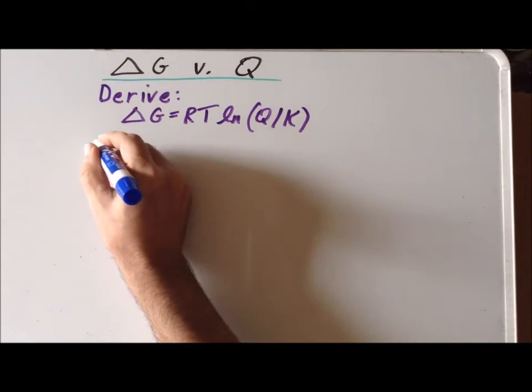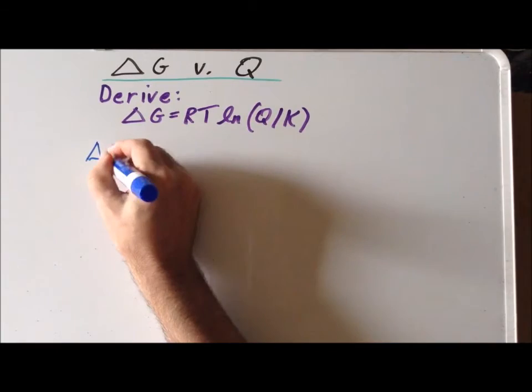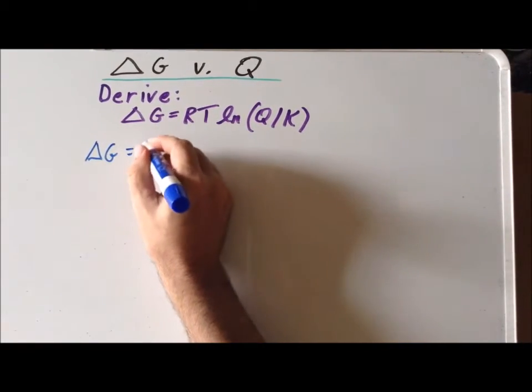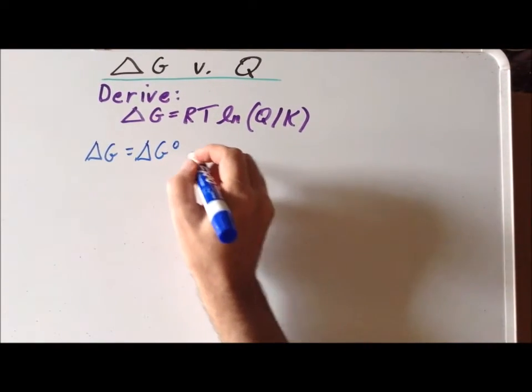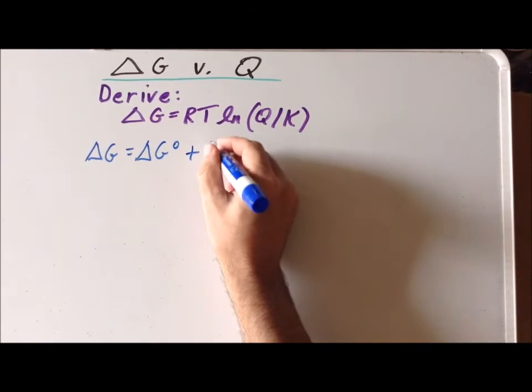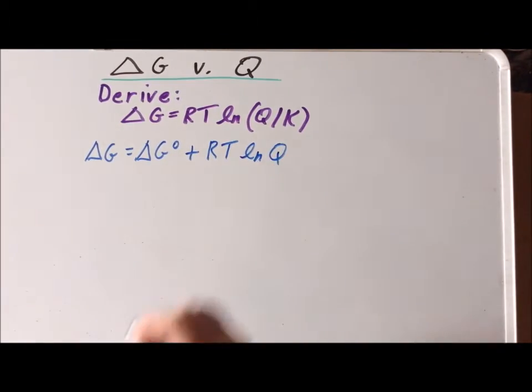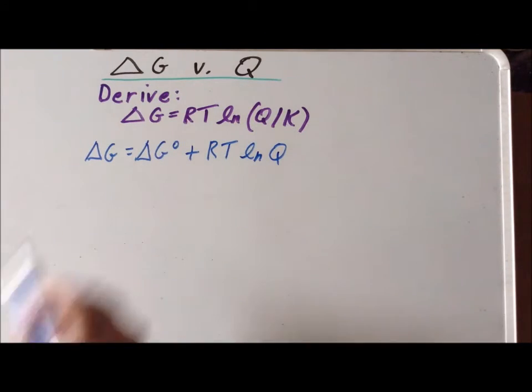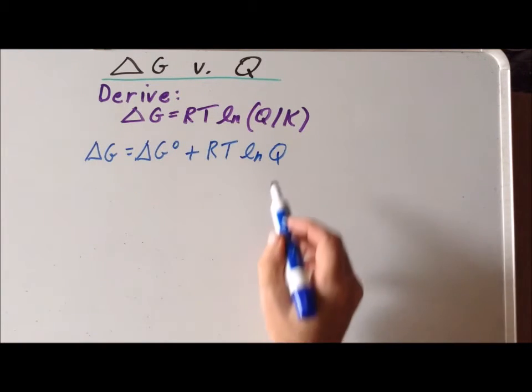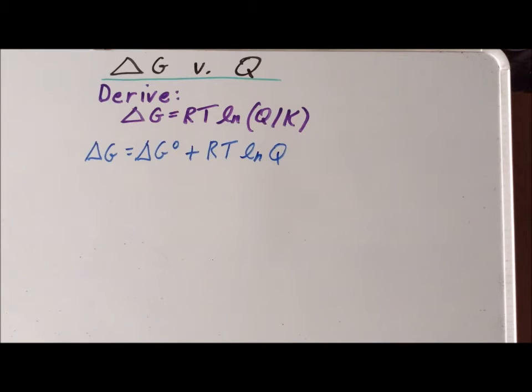The first fact is that delta G is equal to delta G naught plus RT times the natural log of Q. So here, delta G naught is the standard Gibbs energy and Q is the reaction quotient.